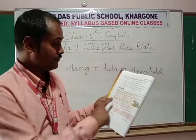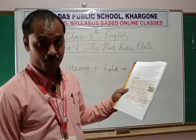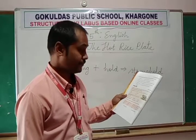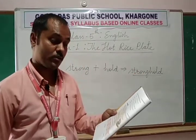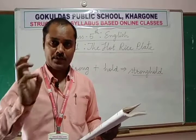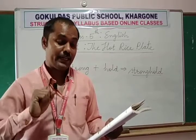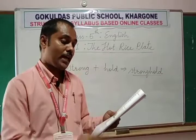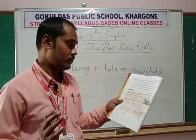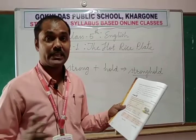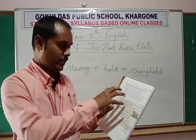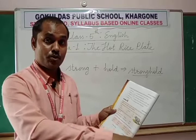Now let's discuss grammar. A noun is the name of a person, or an animal, or a place, or a thing, or an idea. The name of any person, place, animal, thing, or idea is called a noun. Nouns can be common noun, proper noun, concrete noun, abstract noun, and collective noun — these are the five kinds of noun mentioned in your book.